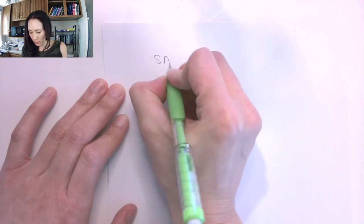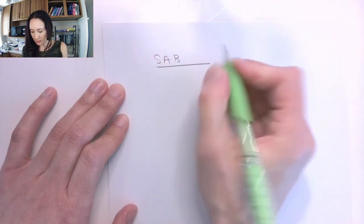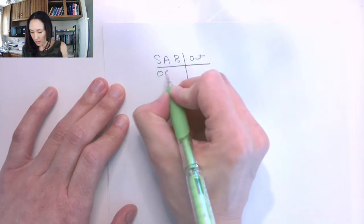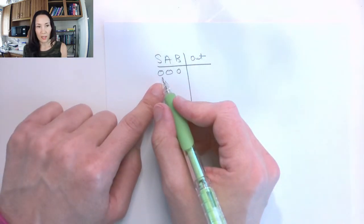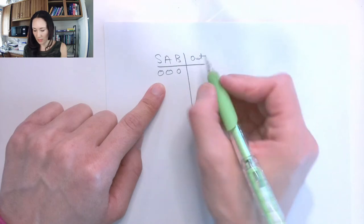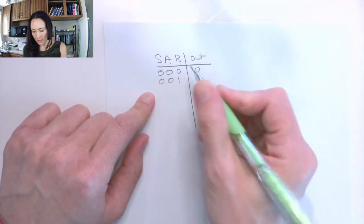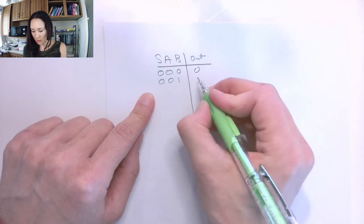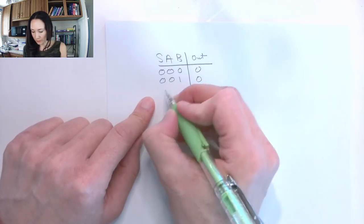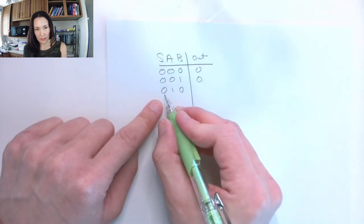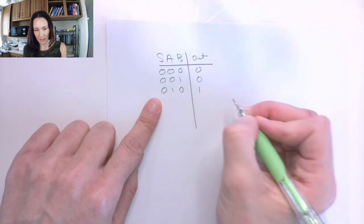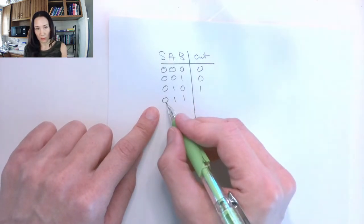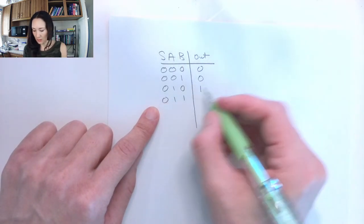The more detailed truth table looks like this. It has s, a, b as our inputs, and out as our output. If we have 0 coming in on s, it's going to select a, so whatever is on a gets piped to out. For s=0, a=0, b=0, out is 0. For s=0, a=0, b=1, it doesn't matter because we're only selecting a, so out is 0. For s=0, a=1, b=0, since select is 0 we pick a, so out is 1. For s=0, a=1, b=1, we're still selecting a, so out is also 1.